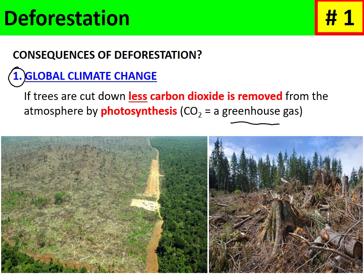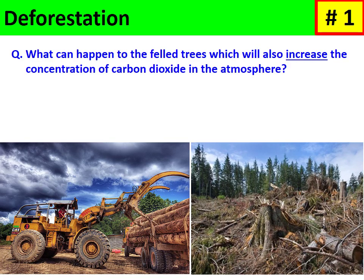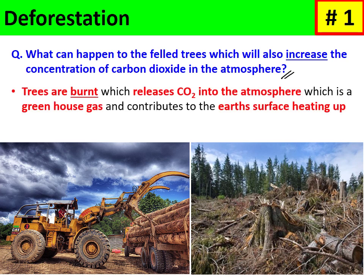CO2 is a greenhouse gas that reflects infrared light back to the Earth's surface, reheating it and resulting in increased temperatures. Additionally, many of the felled trees end up being burnt as biofuel, which releases more CO2 back into the atmosphere. This also acts as a greenhouse gas, reflecting infrared light back to the Earth's surface and further heating it up.